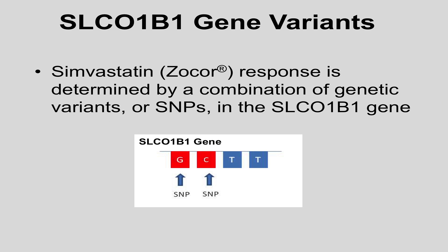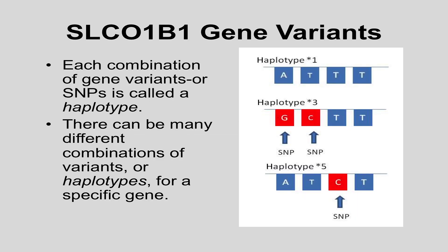Each gene associated with drug metabolism, including SLCO1B1, is expected to have multiple sites of variation. Simvastatin response is determined by a combination of genetic variants or SNPs in the SLCO1B1 gene. Each combination of genetic variants or SNPs is called a haplotype. There can be many different combinations of variants for each gene. To help identify the different combinations, a numbering system is sometimes used. One combination of variants in the SLCO1B1 gene may be called star 3, while another is called star 5.